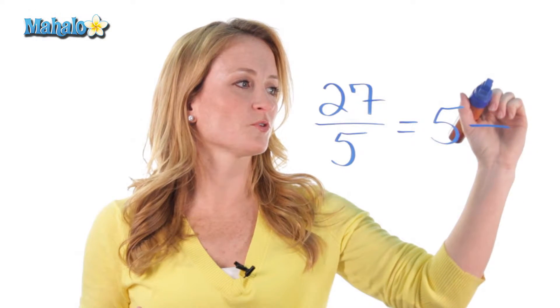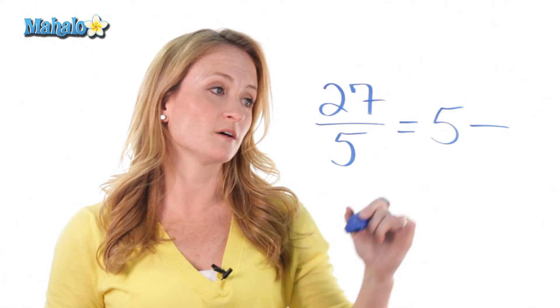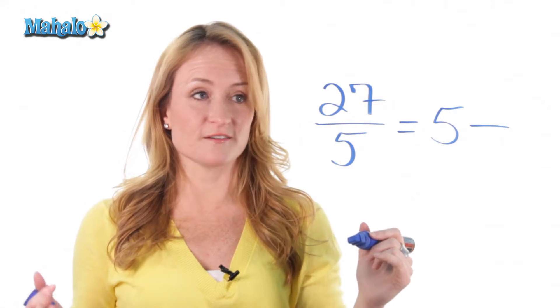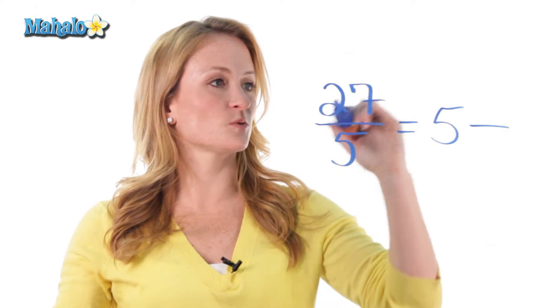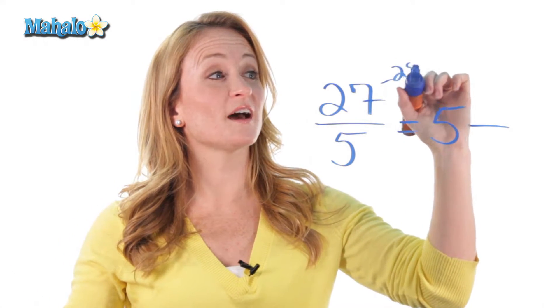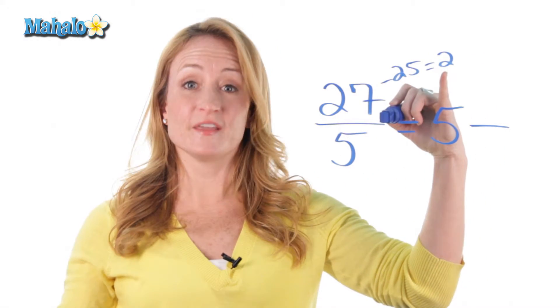Then you have to figure out what your new numerator and denominator would be. 5 times 5 was 25, so an easy way to do this is 27 minus the 25 that you already took out. So 27 minus 25 is 2 — there's your new numerator.